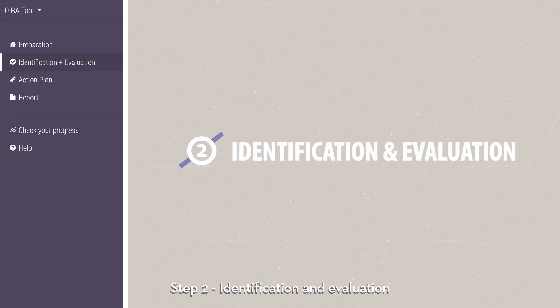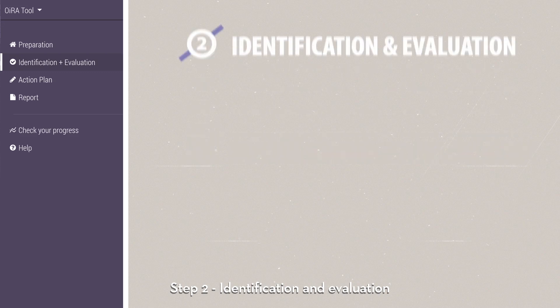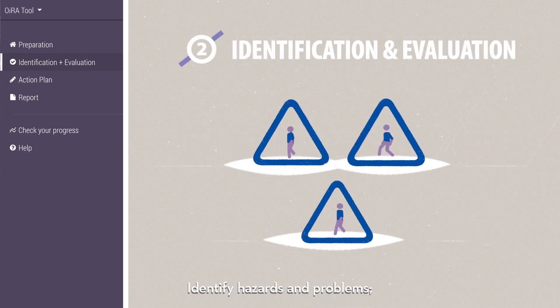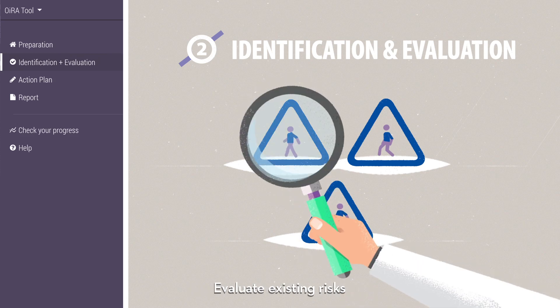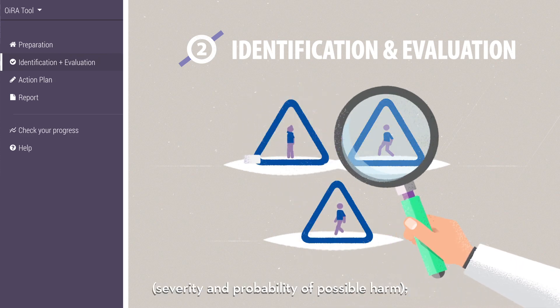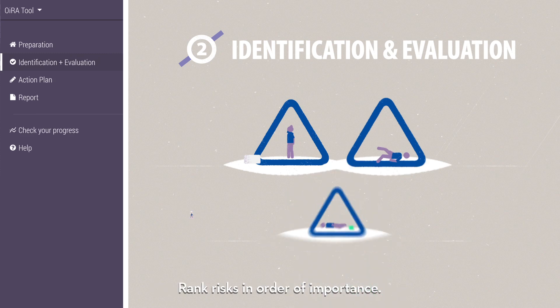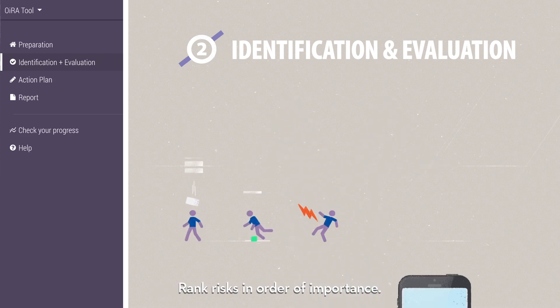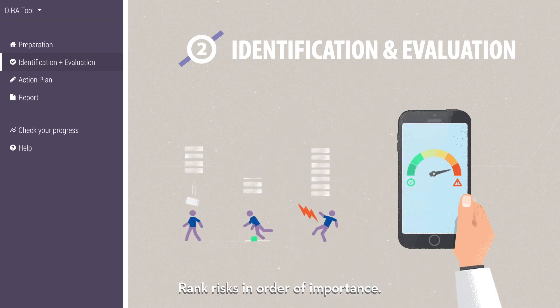Step 2: Identification and Evaluation. Identify hazards and problems. Evaluate existing risks, including the severity and probability of possible harm. Rank risks in order of importance.